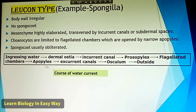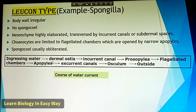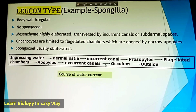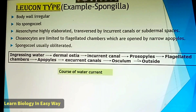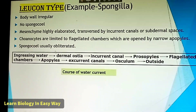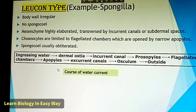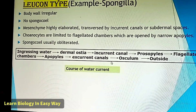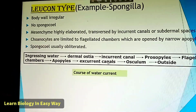Path of water current in Leucon type: ingressing water goes to dermal ostia, to incurrent canal, to prosopiles, to flagellated chambers, to apopiles, to excurrent canals, to osculum, to outside.